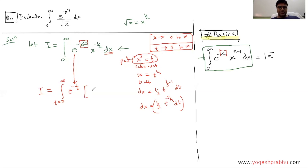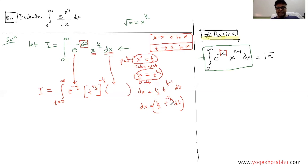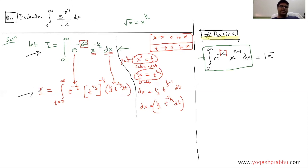Now for the term x raised to negative one half: substituting x equals t raised to 1 by 3, we get t raised to 1 by 3 with the power negative one half. We also substitute for dx, which is 1 by 3 times t raised to minus 2 by 3 dt. The entire integral, originally in terms of x, is now reduced to an integral entirely in terms of t.